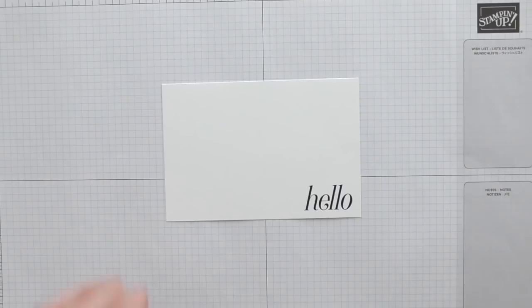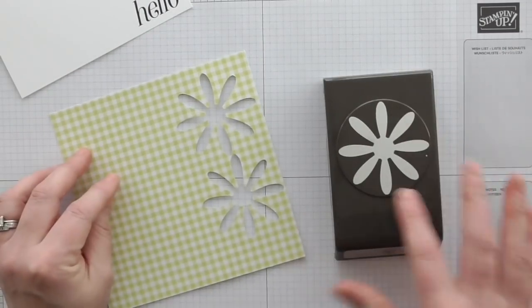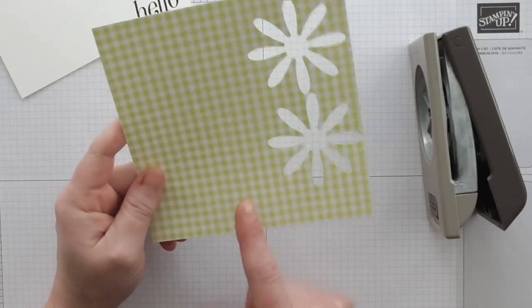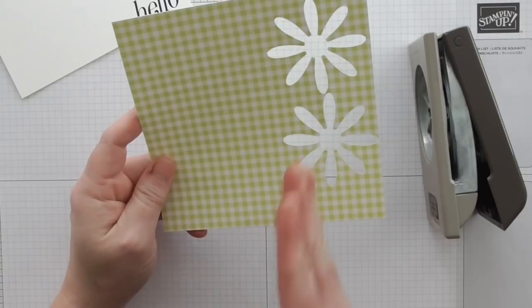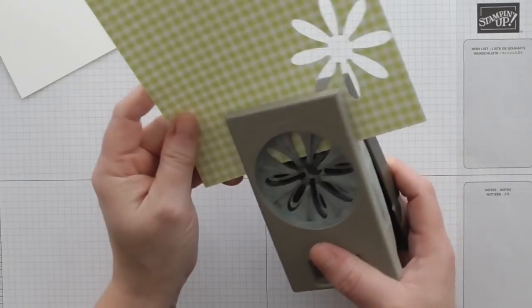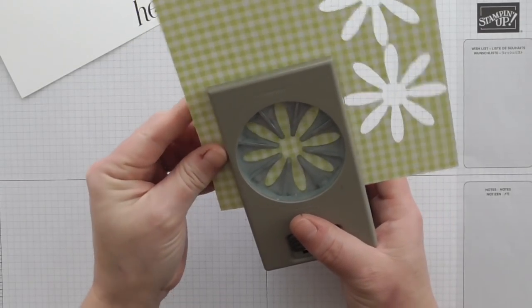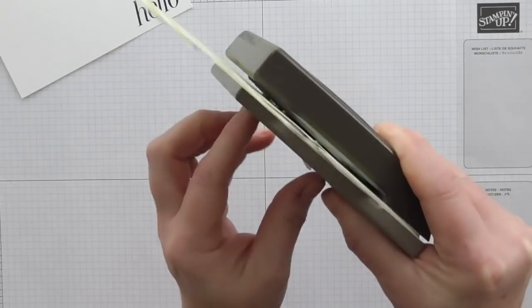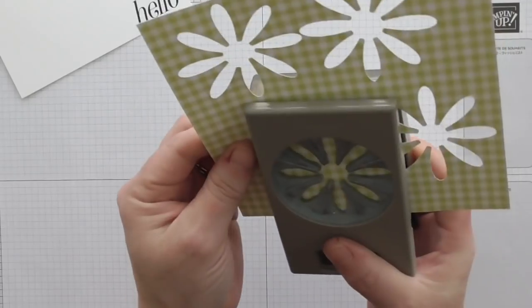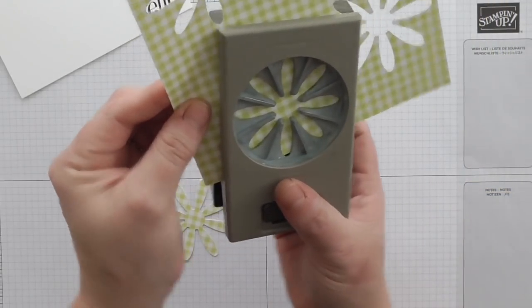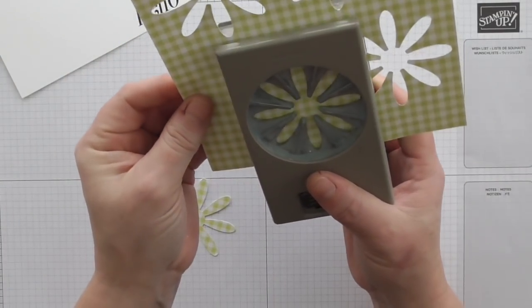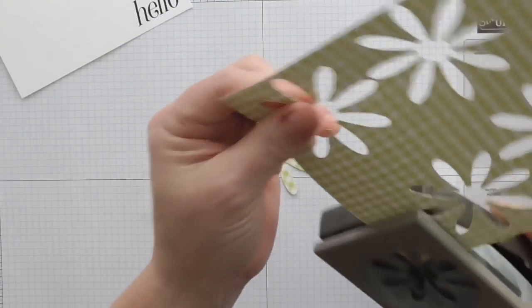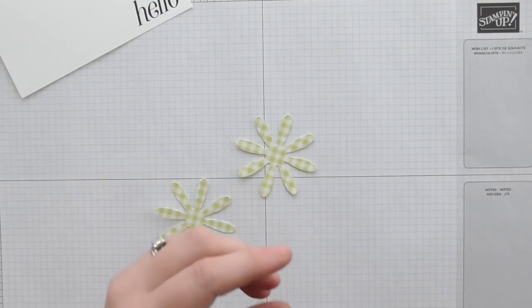So then what we're going to do is using our Daisy Delight punch or Daisy Punch, I'm going to punch two flowers. Now I'm going to make sure that both of them are punching out the squares in the same direction otherwise your flower will make you go cross-eyed. So north to south with the gingham lines straight that way and then punch another one so that the gingham lines are straight north to south. If you punch it out just on the wonk like that it doesn't look as nice and I'm only saying that because I've tried it.